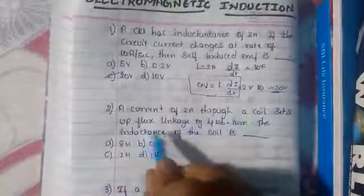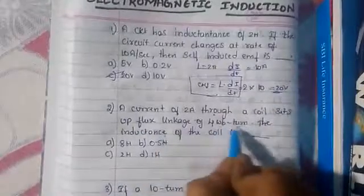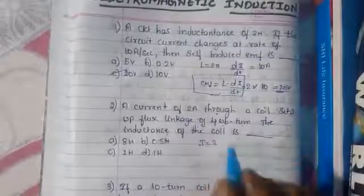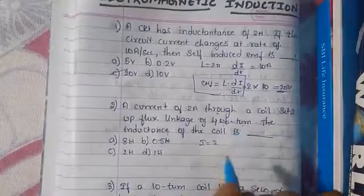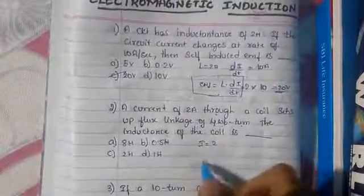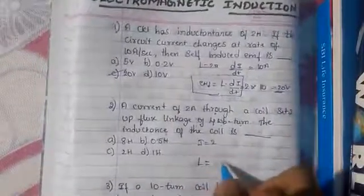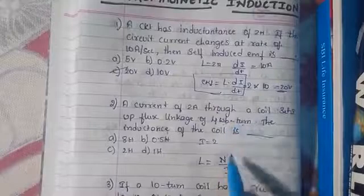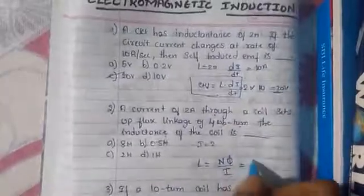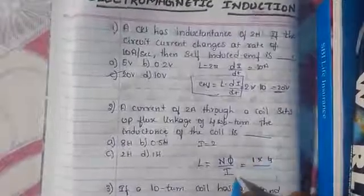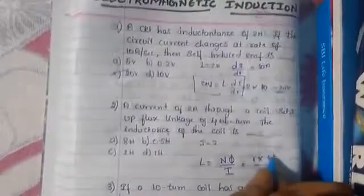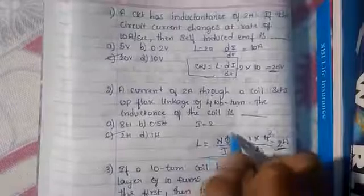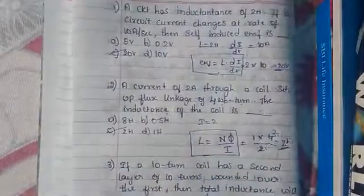Next question: a current of 2 amps through a coil sets up a flux linkage of 4 Weber-turns. Find the inductance of the coil. Given: I = 2 amps, φ = 4 Wb, N = 1. The formula for inductance is L = N×φ / I = 1 × 4 / 2 = 2 Henry.